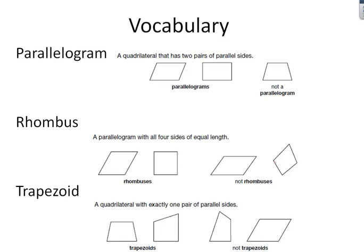A parallelogram is a quadrilateral that has two pairs of parallel sides. Know that a parallelogram has nothing to do with shape — it has to do with the fact that you have sides that are parallel to each other, and you have two pairs of those. So this is not a parallelogram because these two right here are not parallel; they face towards each other, which makes them not parallel.